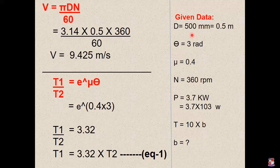So diameter is given. We have the equation of velocity V is equal to πDN divided by 60. So π any value 3.14, diameter 0.5 and 360 divided by 60. So after calculating, we will get the velocity 9.425 meter per second.